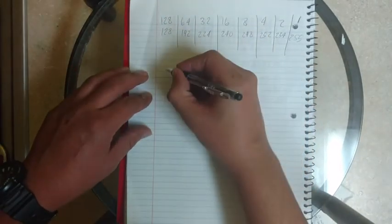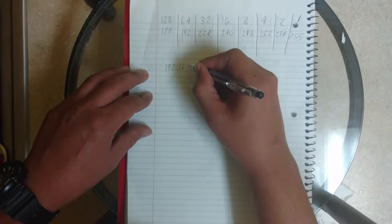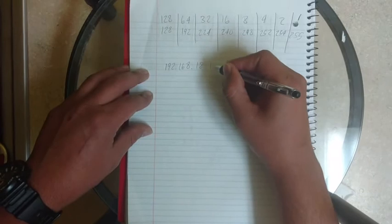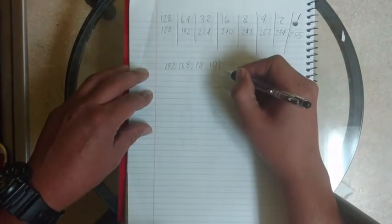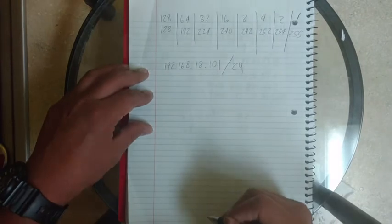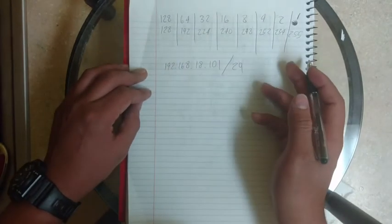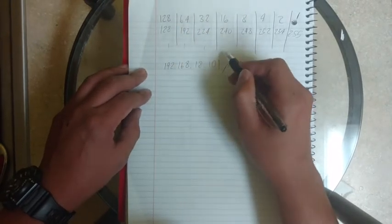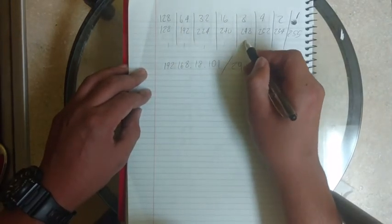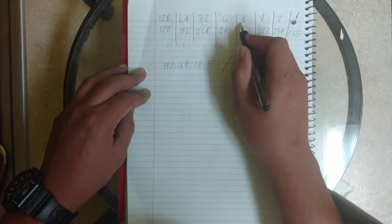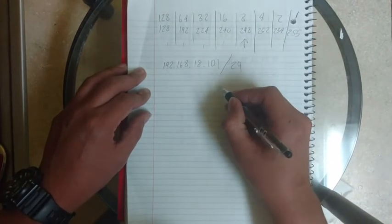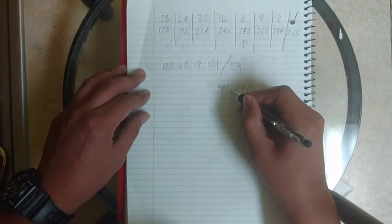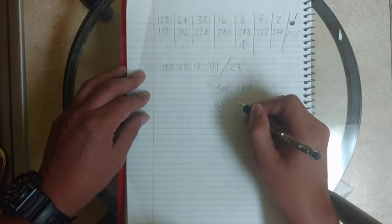This time, we're going to subnet the IP 192.168.18.101, and we're going to make this a slash 29. Slash 29, we're going to begin. We know we're going to be working the fourth octet. We're going to start at 24. This is 25, 26, 27, 28, 29. So we're going to be working with the subnet mask value of 248 with block sizes of eight. I'm going to go ahead and write that down right here. SM 248, and BS, which is block size of eight.